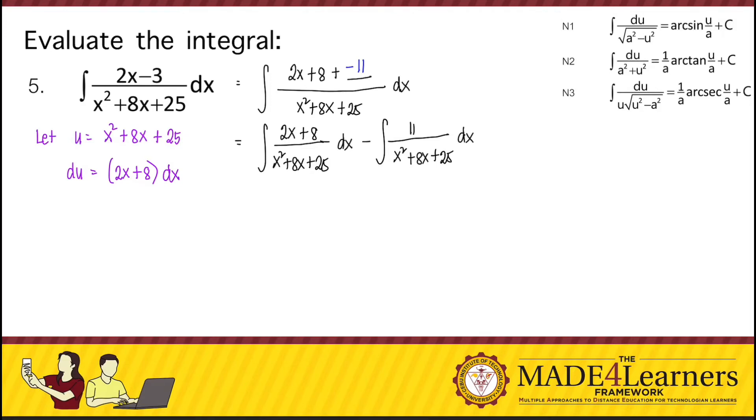So for the first integral, we can now evaluate the integral by integration by substitution. And for the second integral, we can change this denominator into the form a squared plus u squared as in N sub 2.